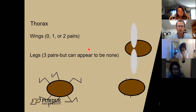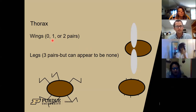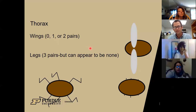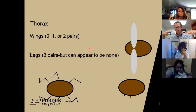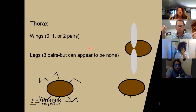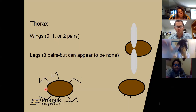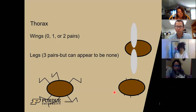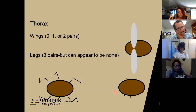On the thorax, that middle body part, we can have wings - zero, one, or two pairs. Some of the wings don't look like wings, like we saw on the beetles - that hard outer covering on the back is actually wings, but they can unfold them to fly. On the thorax is also where the legs are attached, so we'll have three pairs, though they can appear to have none and can be tricky to find.